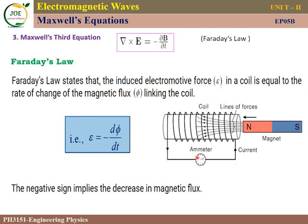The two ends of the coil are connected to an ammeter. A bar magnet is placed inside the coil and moved left and right. As the magnetic lines cut through the coil, an EMF — an electromotive force — is induced, and the current registers on the ammeter.